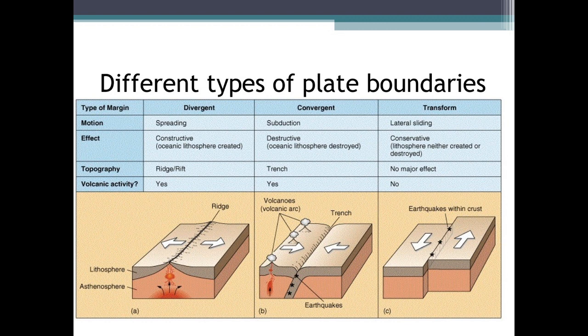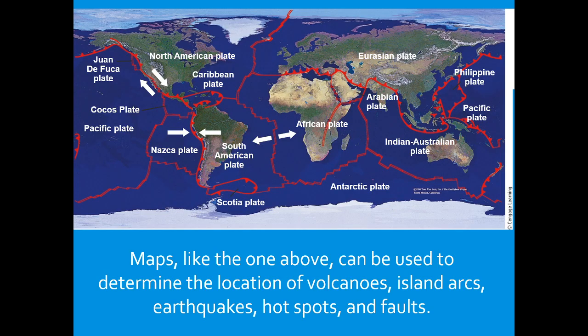At transform boundaries, the two plates may not move consistently — rather than moving constantly, they may get stuck. When enough pressure and stress builds up, they finally slip, and that causes an earthquake. The San Andreas Fault is a transform boundary, and it's very dangerous for earthquakes because of the pressure being built up. Maps of all the different plates can be used to determine where volcanoes, island arcs, earthquakes, hot spots, and faults are — these maps help design responses to different threats.